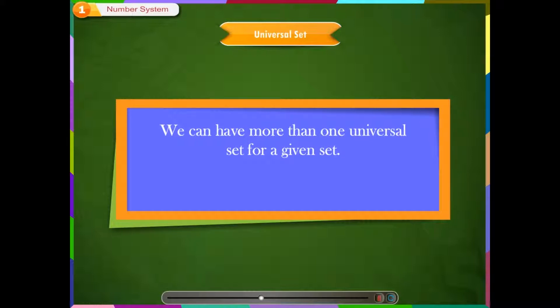This means we can have more than one universal set for different sets. For example, another universal set of the given sets A, B, and C can be 1, 2, 3, 4, 5, 7, 9, 11, 17, and 12.